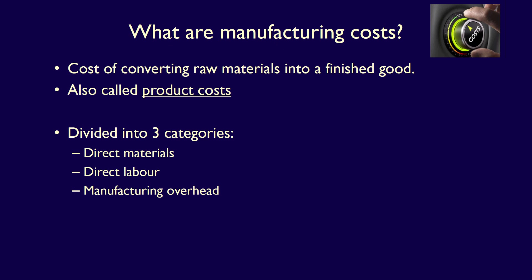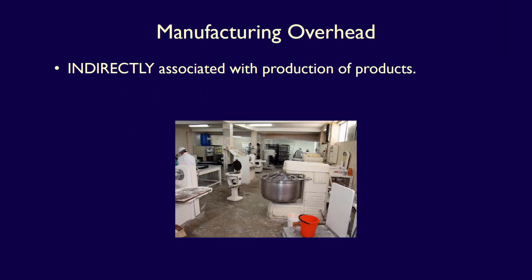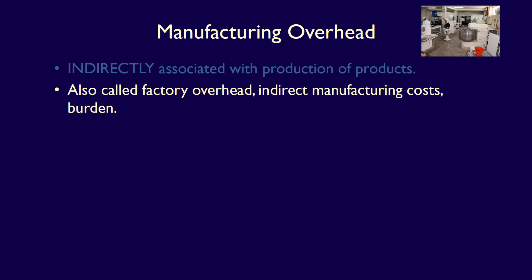Recall that manufacturing costs, also called product costs, are divided into three categories: direct materials, direct labor, and manufacturing overhead. We want to focus on manufacturing overhead. Recall that manufacturing overhead are those costs which are indirectly associated with the manufacturing of a finished product. Manufacturing overhead is also called factory overhead, indirect manufacturing costs, or burden.